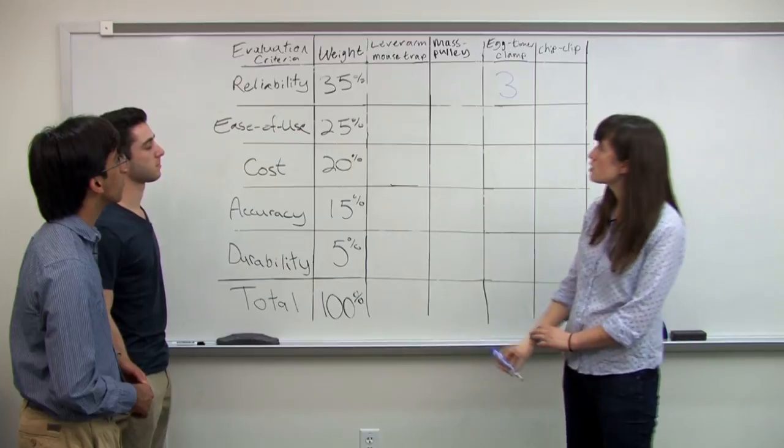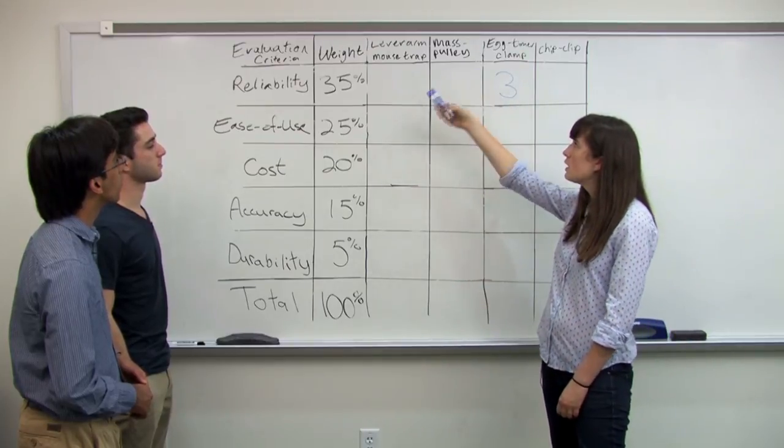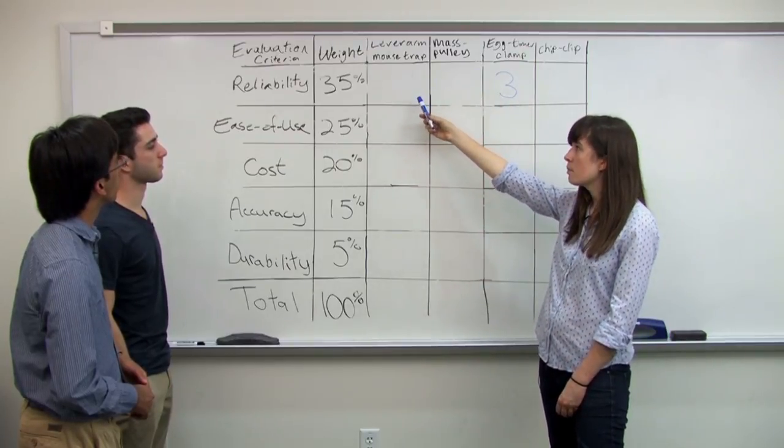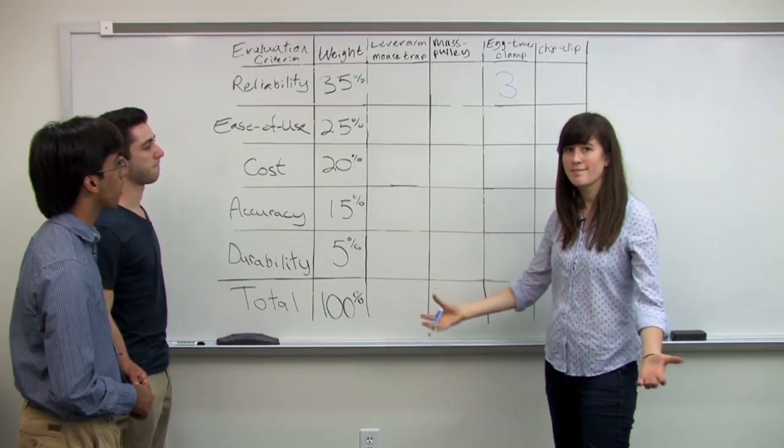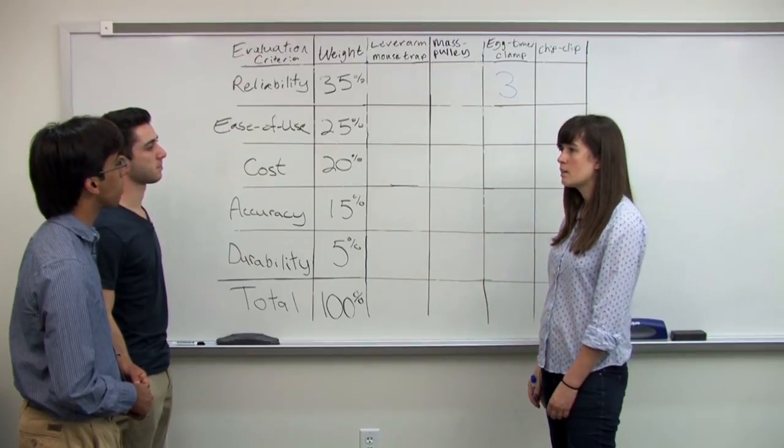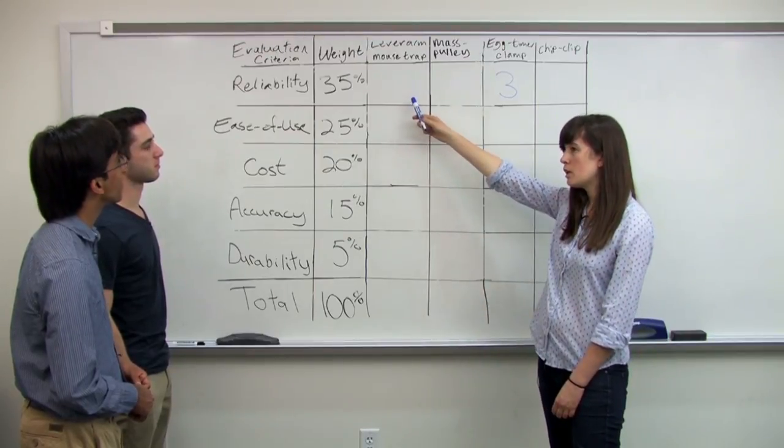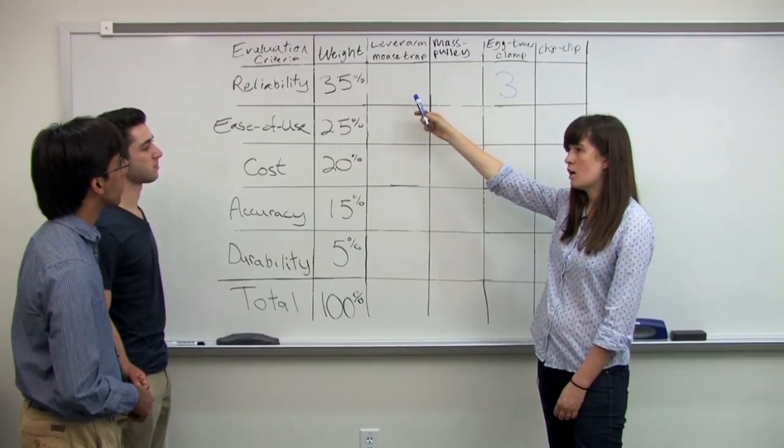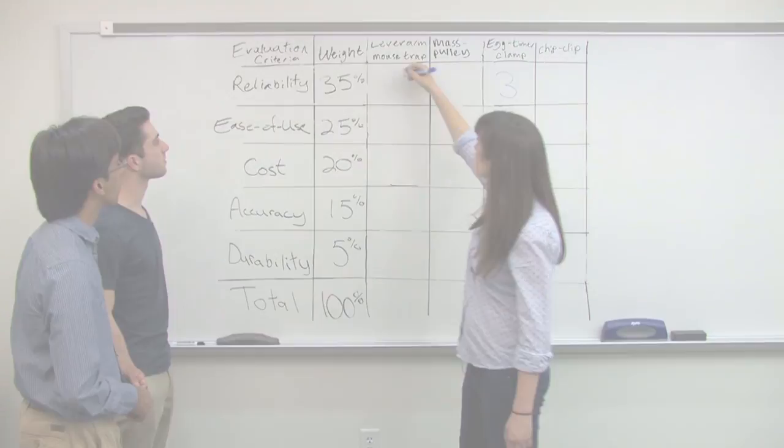So now looking at each one of our ideas, I think a lever arm with a mousetrap, mousetraps tend not to fail. And so I think that it would score very well for reliability. I'd give it a five based off our previous discussion.